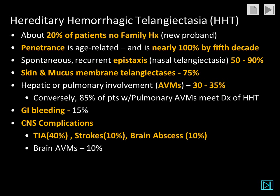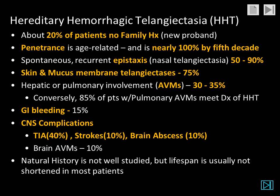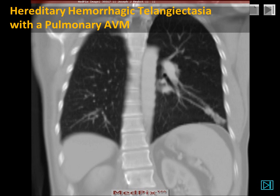CNS complications include TIA, strokes, and brain abscesses because of the embolization of bacteria through the right-to-left shunt. Brain and hepatic arteriovenous malformations occur in a minority of patients, probably around 10%. The natural history is not well studied, but the lifespan is usually not significantly shortened in most patients.